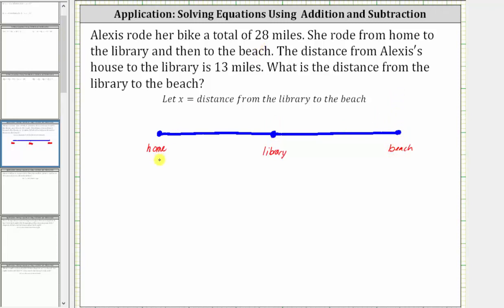And we know the total distance is 28 miles because that's given. We also know the distance from her house to the library is 13 miles, which would be this distance here. And we're letting x equal the distance from the library to the beach, which would be this distance here. And therefore, the equation is 13 plus x equals 28.